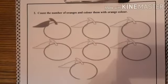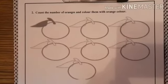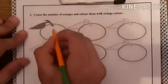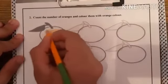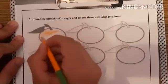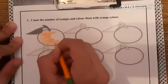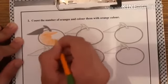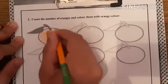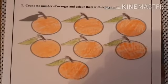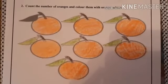The second question says, count the number of oranges and color them with orange color. 1, 2, 3, 4, 5, 6 and 7. Color all the oranges like this.